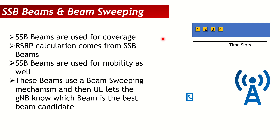Now let's talk about how SSB beam sweeping works. In a typical frame we have time slots. In this example, we have four SSBs — an SSB burst. Some vendors can have four, some six, some eight, so it varies. With four SSB beams in one SSB burst, they come in sequence, with only a few symbols between them — microsecond-level differences. The next burst comes after 20 or 40 milliseconds, depending on the configured SSB period.